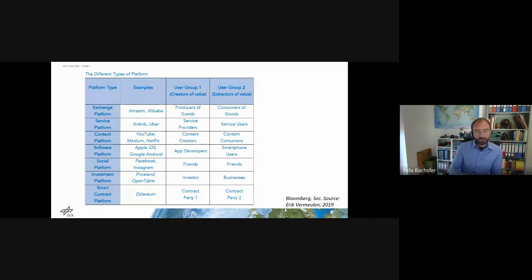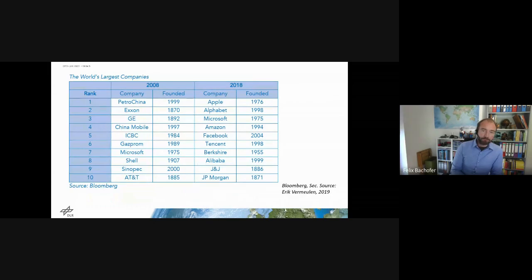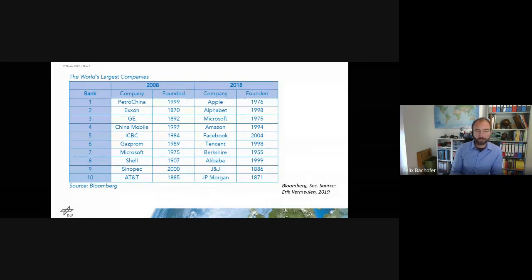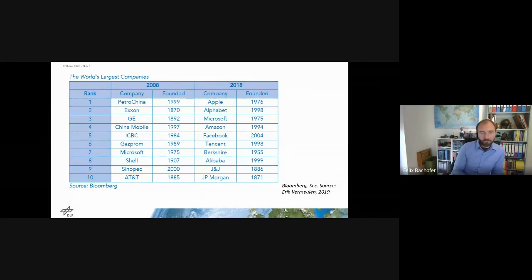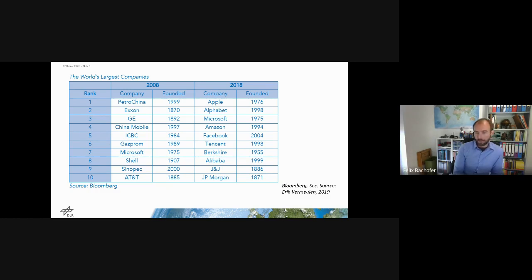This is why we call it a platform ecosystem — it is much more complex than standard piped value-adding processes. This table, though a bit outdated, really underlines the point. On the left-hand side in 2008, we see some famous large companies with long histories. By 2018, new companies evolved, and most of them have a platform as one of their main business models.